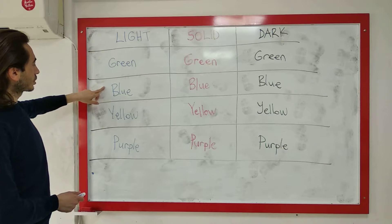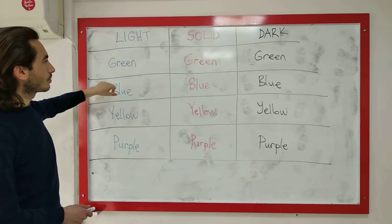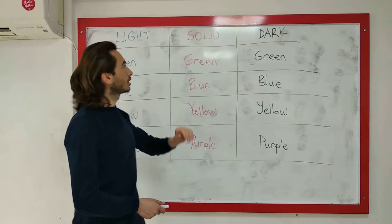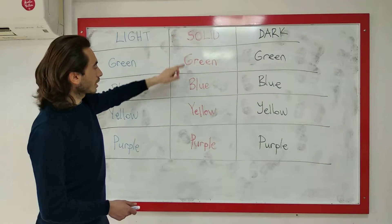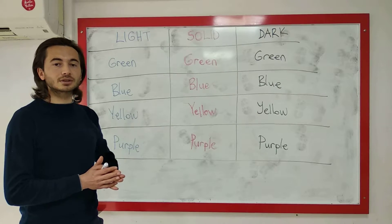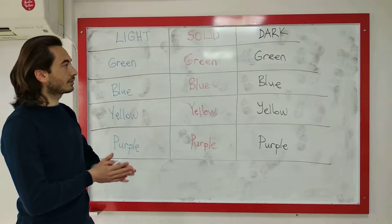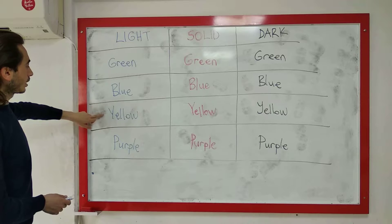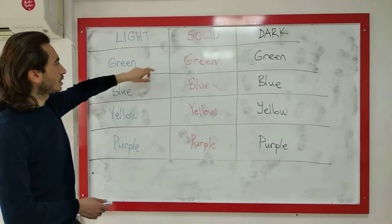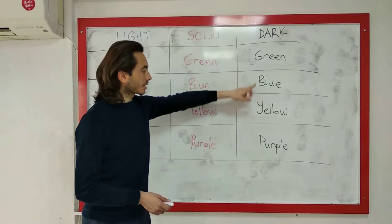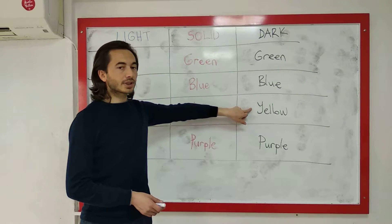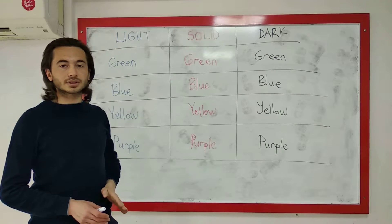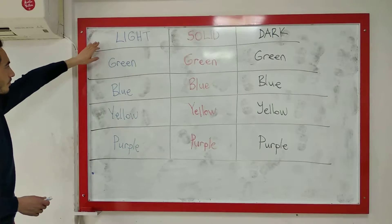Aynı şekilde light blue açık mavi, dark blue koyu mavi, solid blue ikisinin ortası tam mavi veya gerçek mavi diyebiliriz. Light yellow açık sarı, dark yellow koyu sarı, solid yellow ikisinin ortası gerçek sarı, tam sarı.